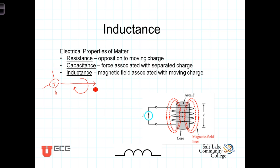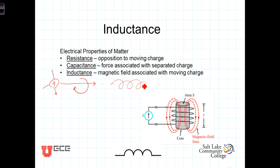You can take this wire containing the moving charge and coil it about itself, and as you do so, the magnetic field in each loop reinforces and strengthens the overall magnetic field. If you take that coil and wrap it around some core, you've got effectively what is known as an inductor.